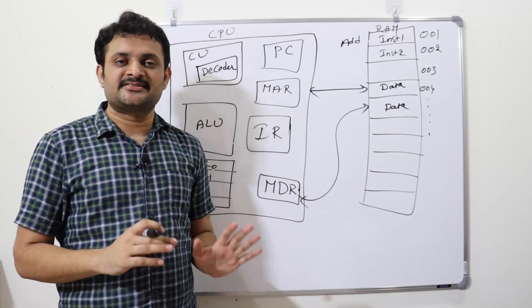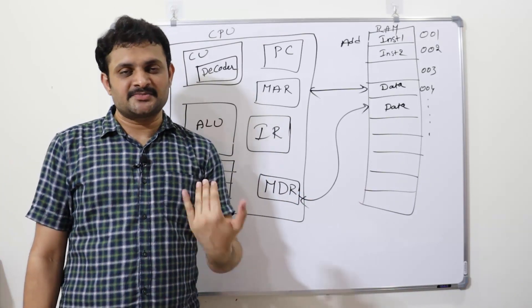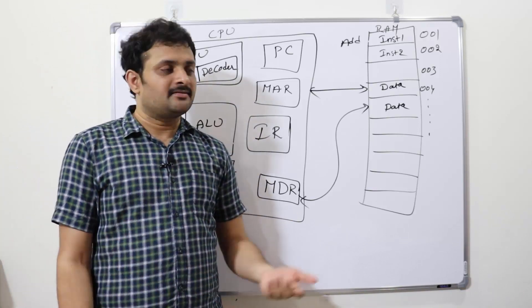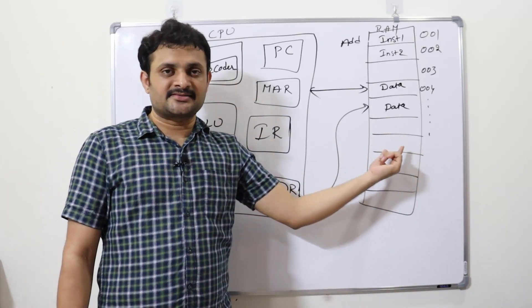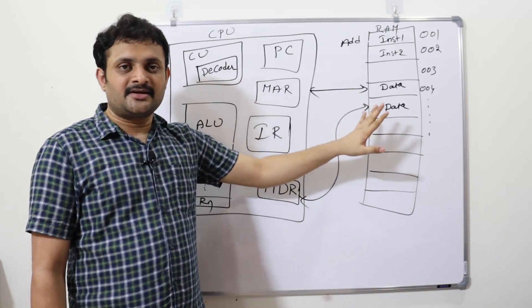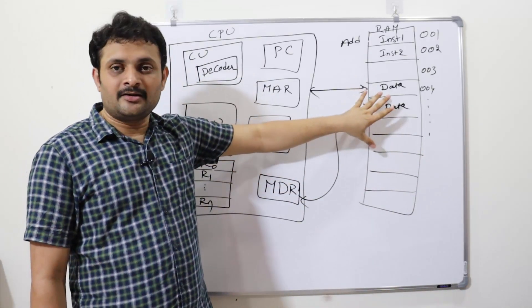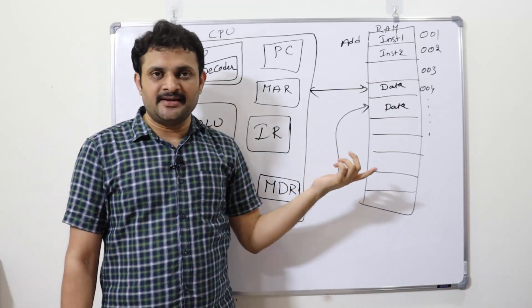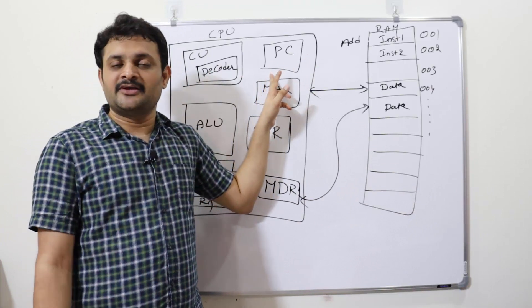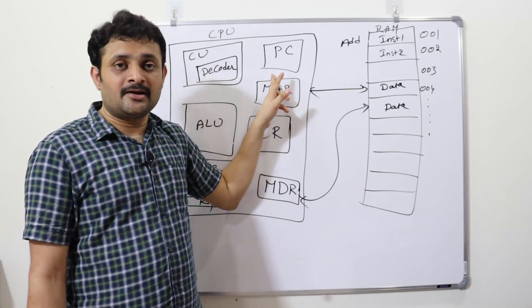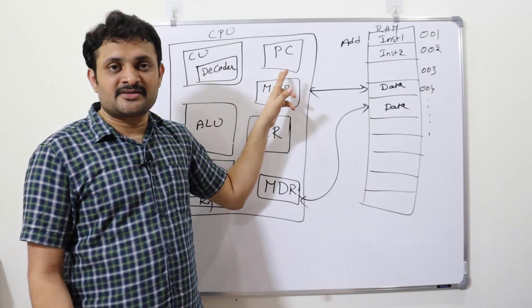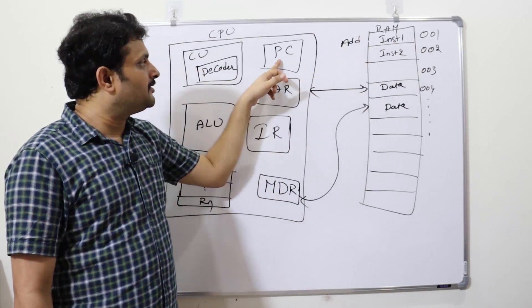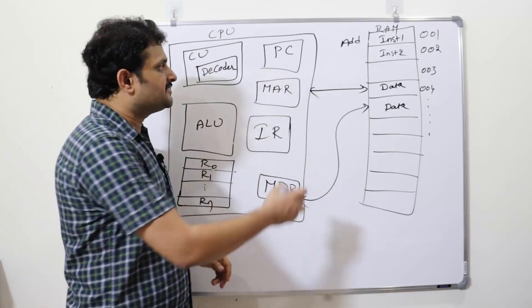Let us go through the same process step by step. Step one: whatever program you want to run is loaded into RAM from the hard disk. Step two: the program counter initiates the operation — it holds the address of the next instruction. In our example, address 001 is loaded into the program counter.